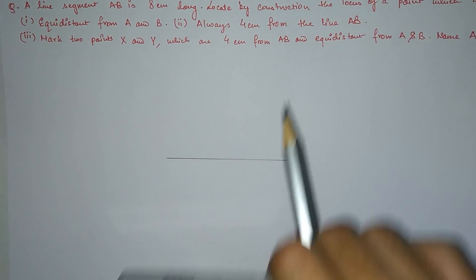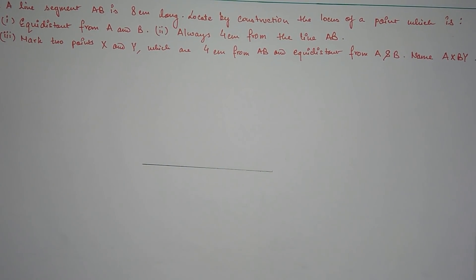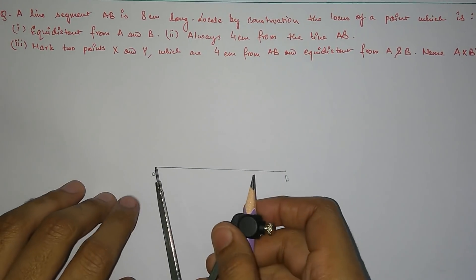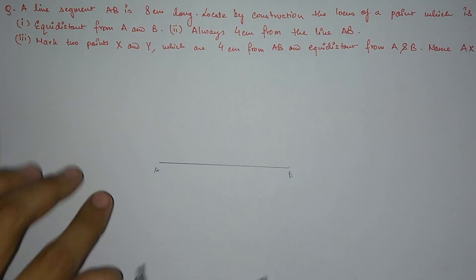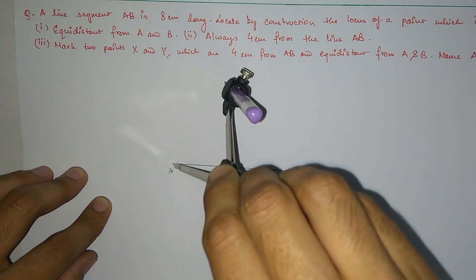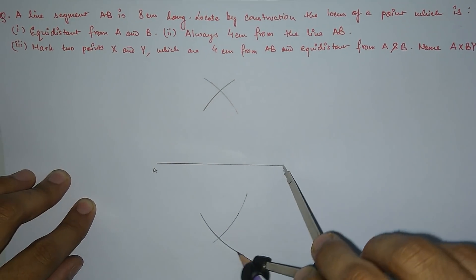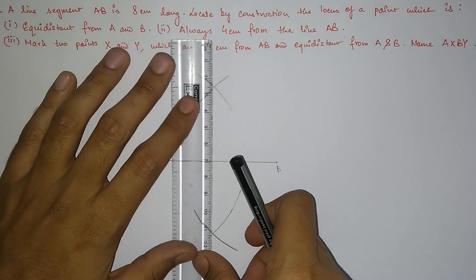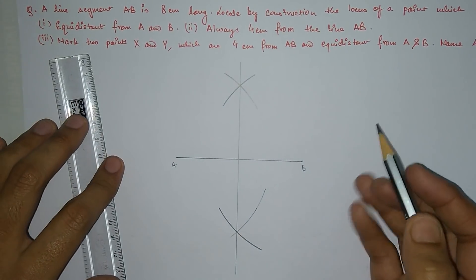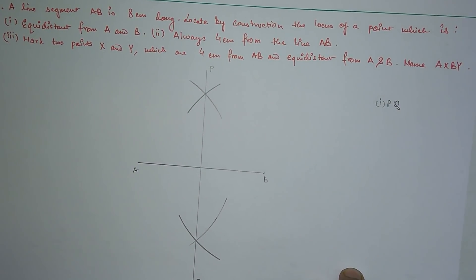Now the first question asks us to find the locus of a point equidistant from A and B. As told in the previous questions, the locus of a point equidistant from two fixed points A and B is the perpendicular bisector of the line joining them. We take a compass, set it to more than half the length of AB, and construct the perpendicular bisector by making arcs above and below from both A and B, then joining the intersection points. Let's mark this line PQ. Line PQ is the locus of the point equidistant from A and B.